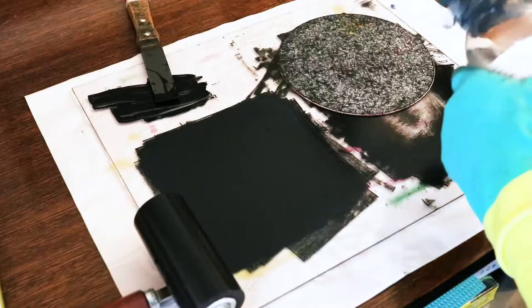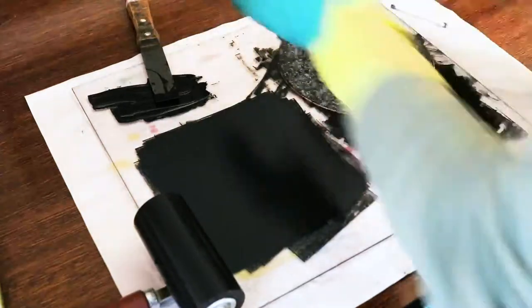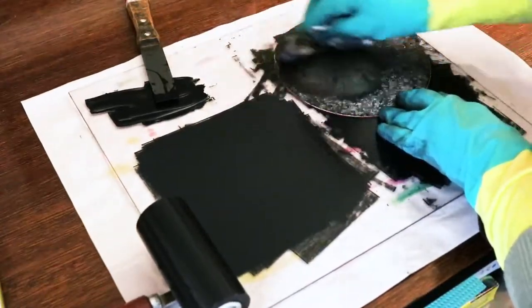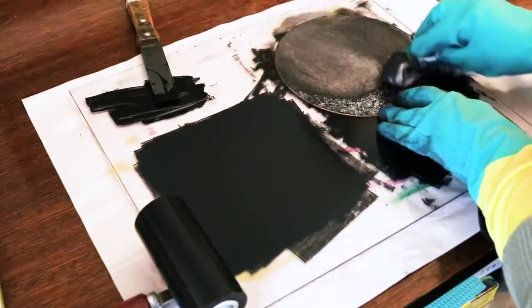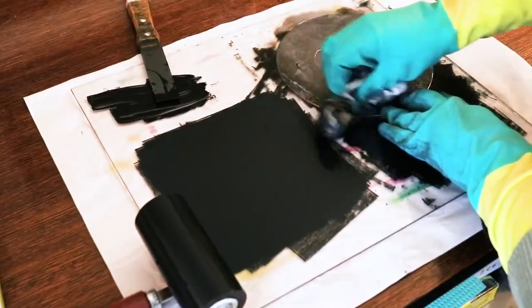The next step is to clean your plate. I'm using the same citrus brush cleaning solvent for this, wiping it on with a cloth then going over it again until most of the ink has been removed.